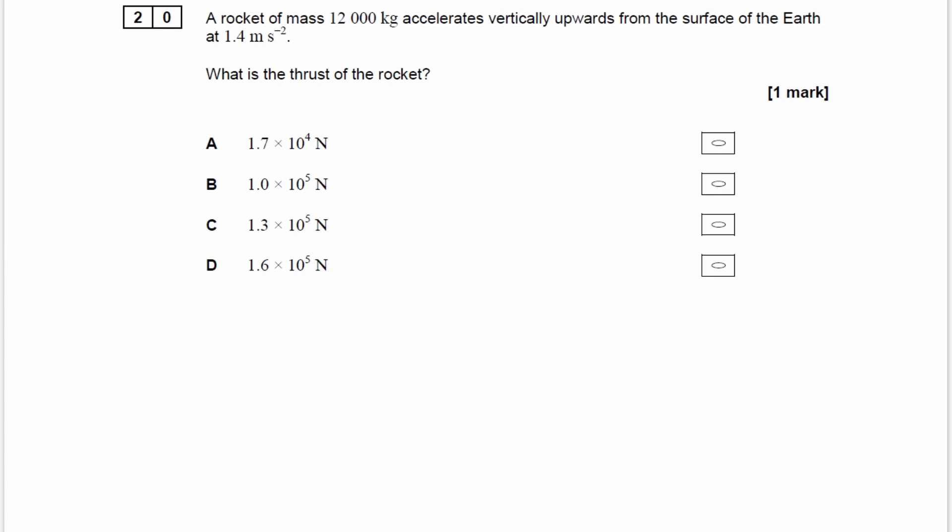If that doesn't make sense, let's think about a force diagram. So let's say here is our rocket. The rocket has two forces acting upon it. We have the thrust force going upwards, which is unknown, I'll call that T. And then we also have a weight force, and the weight force is equal to 12,000g.